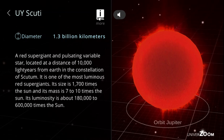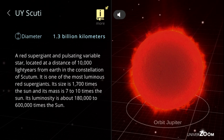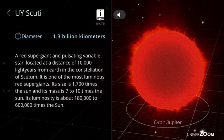UY Scuti, diameter: 1.3 billion kilometers. A red supergiant and pulsating variable star, located at a distance of 10,000 light years from Earth in the constellation of Scutum. It is one of the most luminous red supergiants. Its size is 1,700 times the sun and its mass is 7 to 10 times the sun. Its luminosity is about 180,000 to 600,000 times the sun.